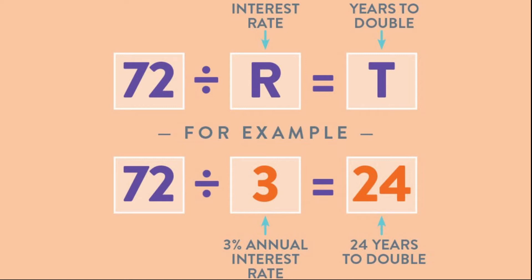That's why people say don't pay the minimum on your credit cards. If you have a 20% interest rate on your credit card, every 3.6 years the amount you owe will double if you don't pay it off. That's why they say interest will kill you — you have to be able to pay the majority, if not all of it, off.